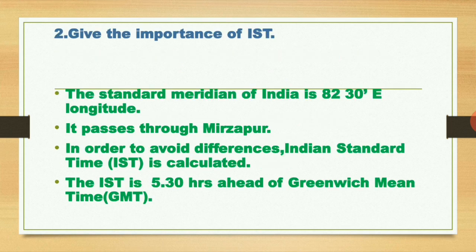Next question: give the importance of IST. IST means Indian Standard Time. Each and every nation has a standard meridian, and for India the standard meridian is 82 degrees 30 minutes east longitude. It passes through Mirzapur, near Allahabad.